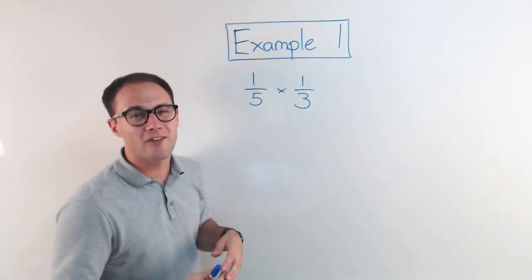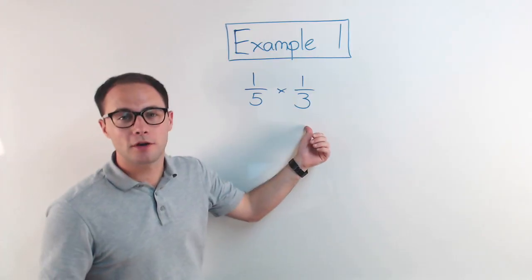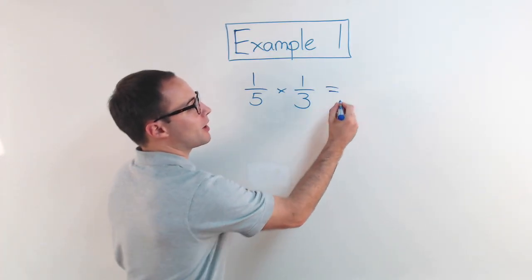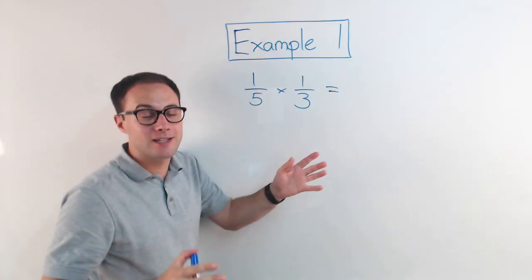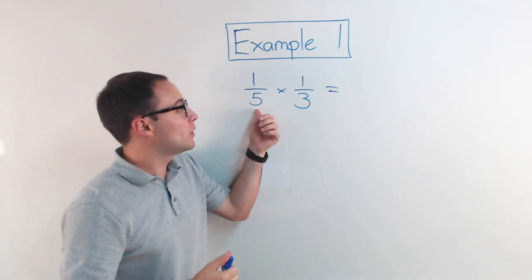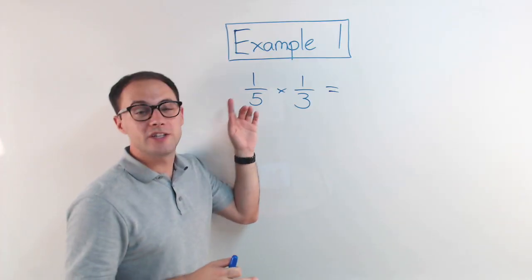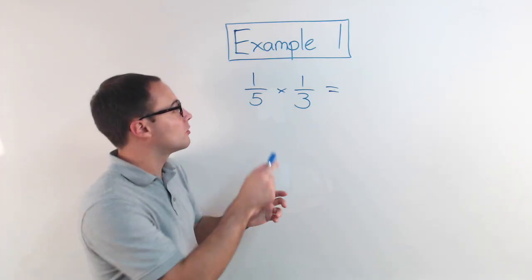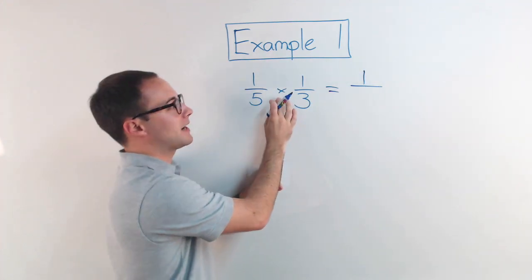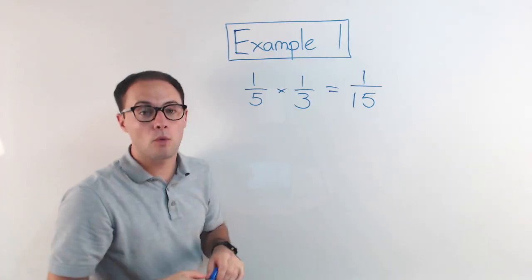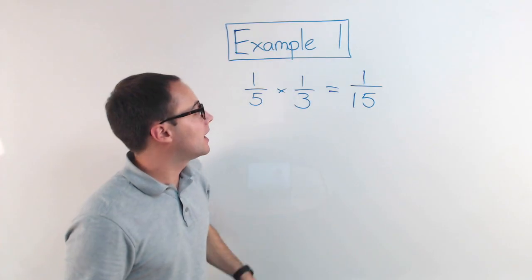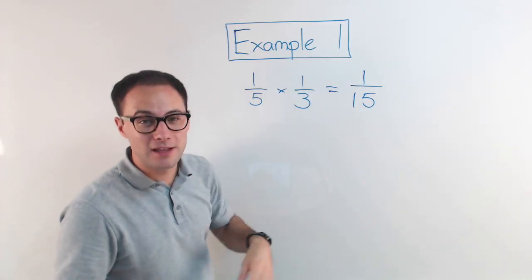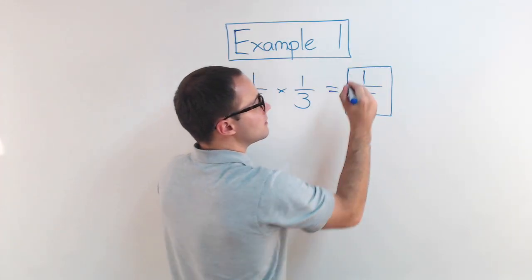Let's look at another example. Okay so example one we're going to start off pretty simple. One-fifth times one-third. If you remember from that pizza problem we said to multiply fractions you don't need common denominators. That's adding and subtracting. We just multiply straight across. So one times one is one and five times three is fifteen. Now when you're working with fractions we always want our answers in simplest form. In this case one-fifteenth is in simplest form. So I'm done.